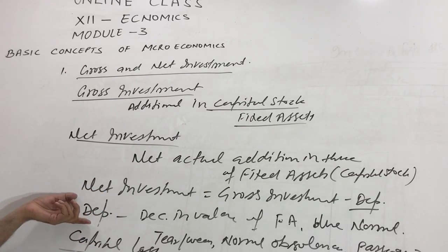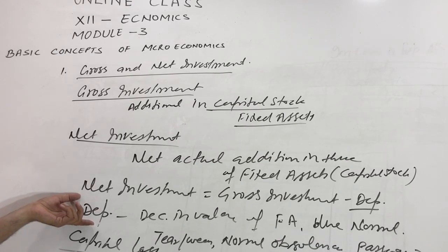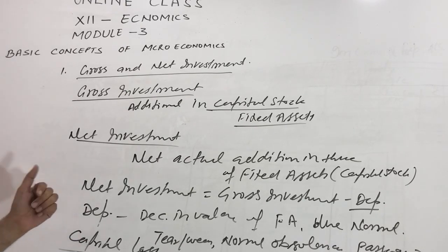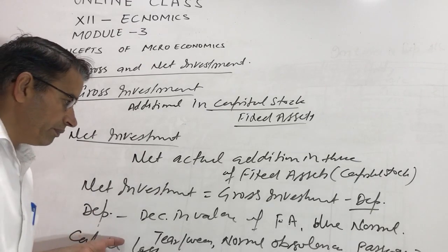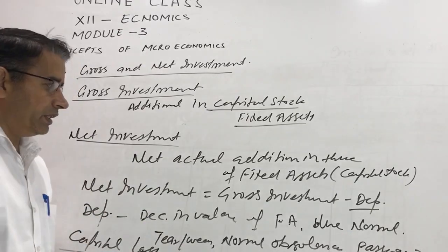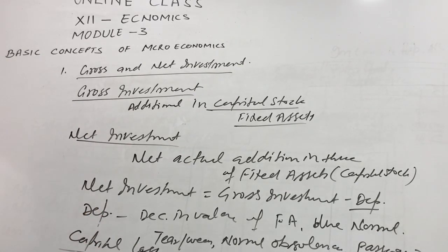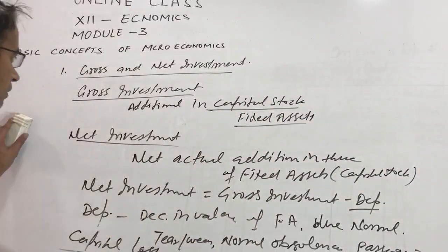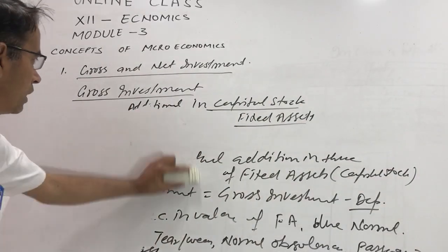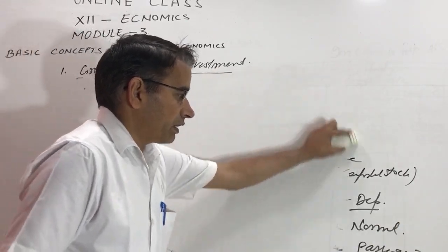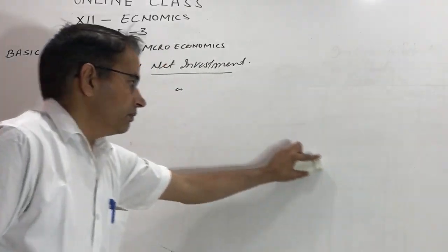Capital loss hampers the production process, but depreciation does not hamper production because depreciation occurs through regular use. Additionally, a provision can be made for depreciation to purchase new assets or new capital stock in the future, but no provision is made for capital loss because it happens suddenly.